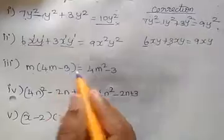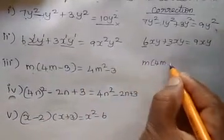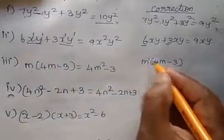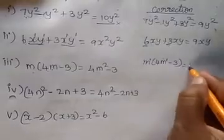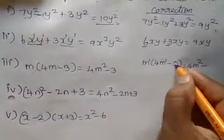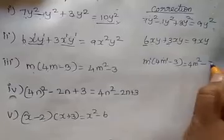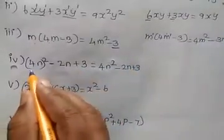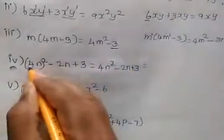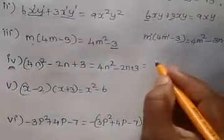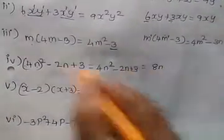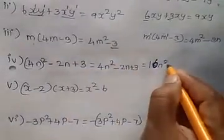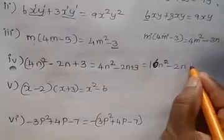Next: m into (4m minus 3). This is multiplication. So m into 4m is 4m squared, and m into 3 is 3m — this step was a mistake. Correct: 4m squared minus 3m. Similarly: 16n squared minus 2n plus 3. And 4n squared plus 4n squared — next, multiplication.